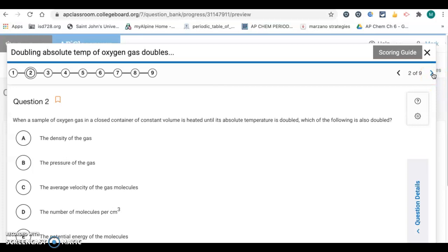All right, next, number two. When a sample of oxygen gas in a closed container of constant volume is heated until an absolute temperature is doubled, which of the following is also doubled? All right, so temperature and pressure are directly proportional. So if the temperature doubles, the pressure is also going to double.